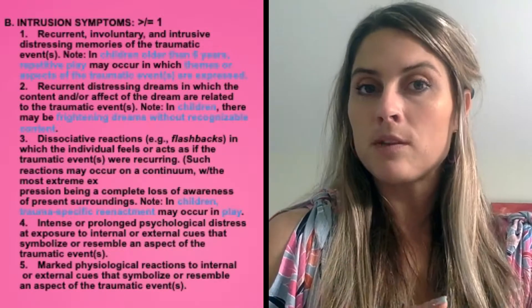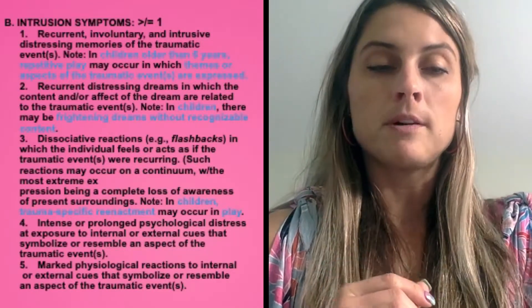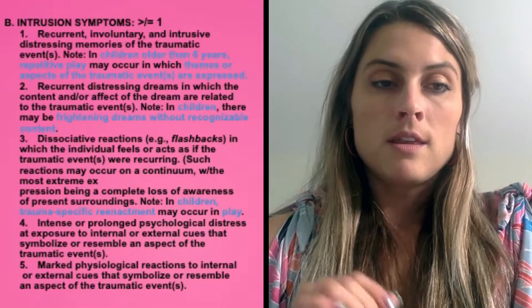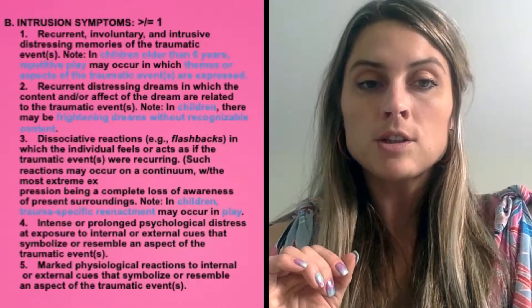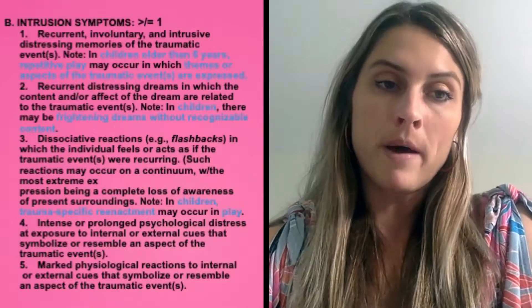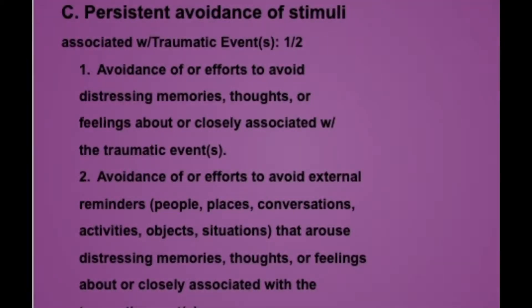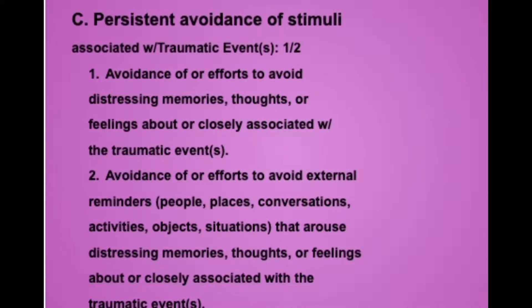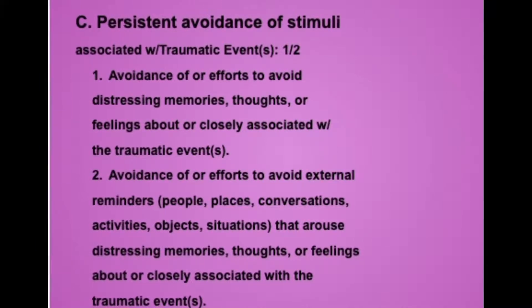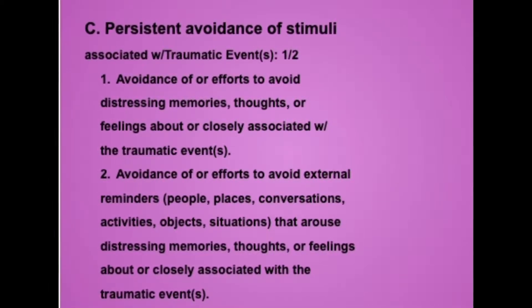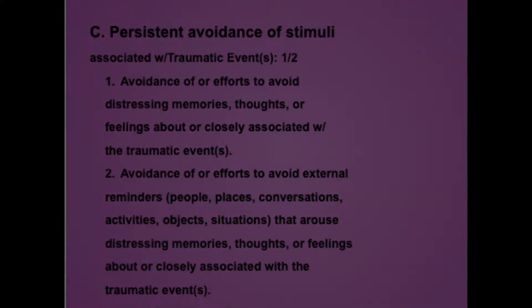If you want to know more about specific treatments and modalities that can help trauma, comment below or email me. The fifth thing is marked physiological reactions to internal or external cues that symbolize or resemble an aspect of the traumatic event — it's distress you feel internally and emotionally. Criterion C is persistent avoidance of stimuli, whether internal or external — internal distressing memories, thoughts, and feelings, or external reminders of people, places, conversations, activities, objects, and situations that arouse those distressing memories, thoughts, or feelings.